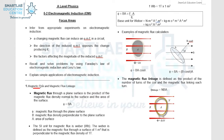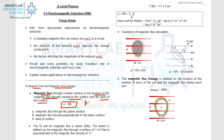Let's take a look at the definition for magnetic flux and magnetic flux linkage. Magnetic flux is the product of the magnetic flux density normal to the surface and the area of the surface. This is the formula for calculating magnetic flux. Bear in mind that the flux density has to be perpendicular to the area A. The SI unit for magnetic flux is Weber, Wb.